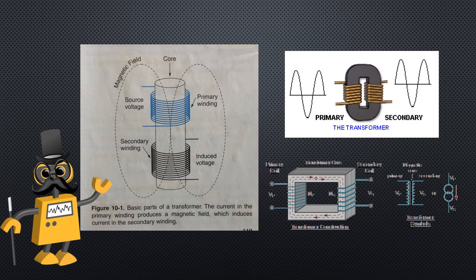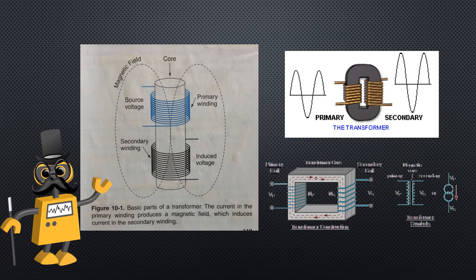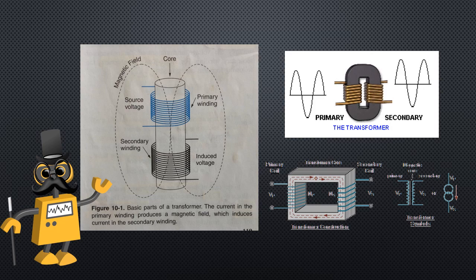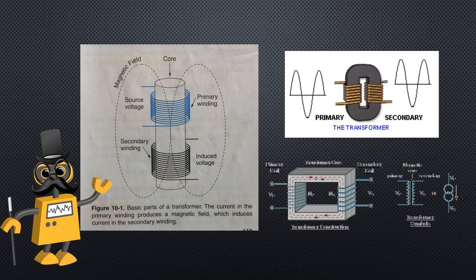High voltage terminals—your primaries—are marked H, H1, H2, and so on, while low voltage terminals are marked X, X1, X2, etc.